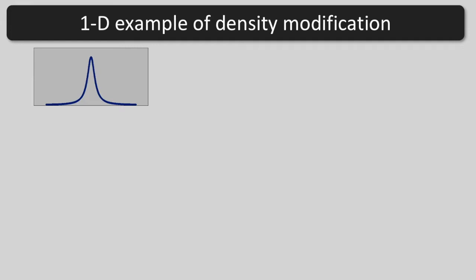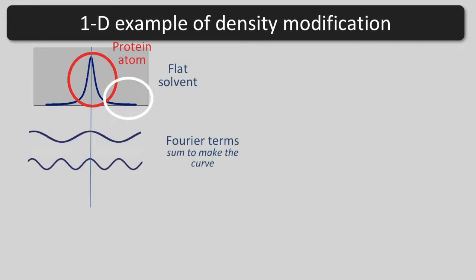Let's look at a one-dimensional example that has all the details of statistical density modification. Let's imagine a crystal with one protein atom, the peak in this 1D curve, and a flat solvent, the flat part of the curve. Now, let's think of this curve as a Fourier sum of sines and cosines, just like crystallography, where the map is a sum of Fourier terms.